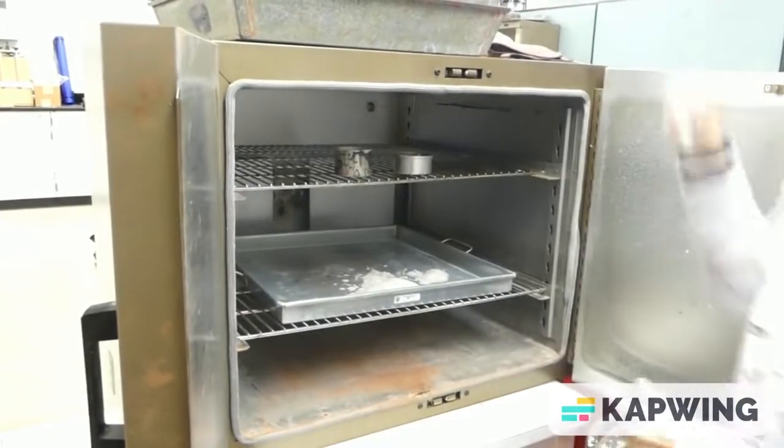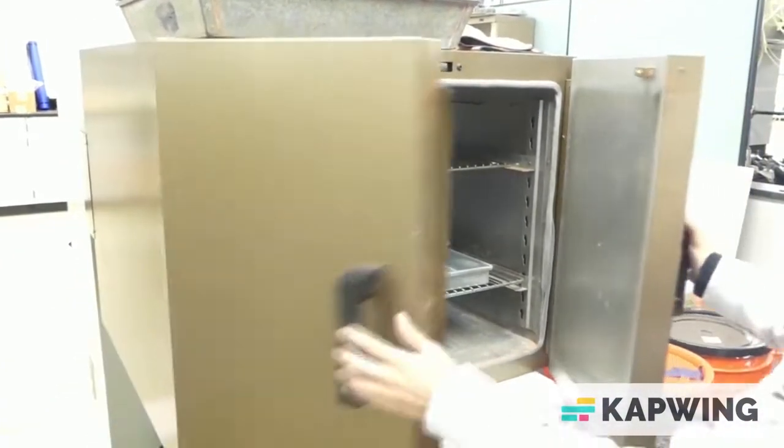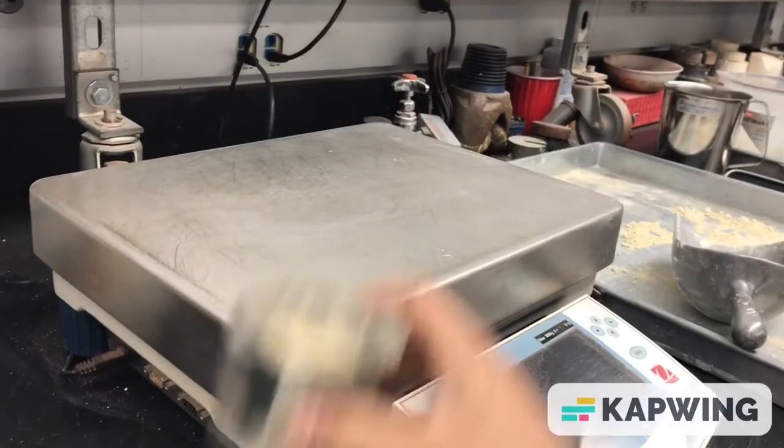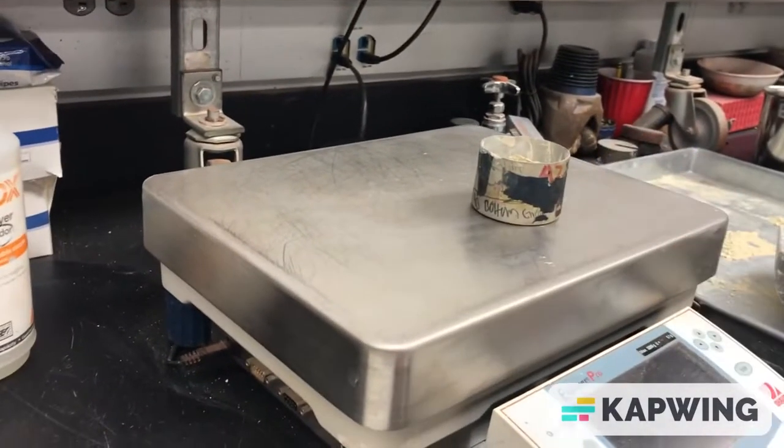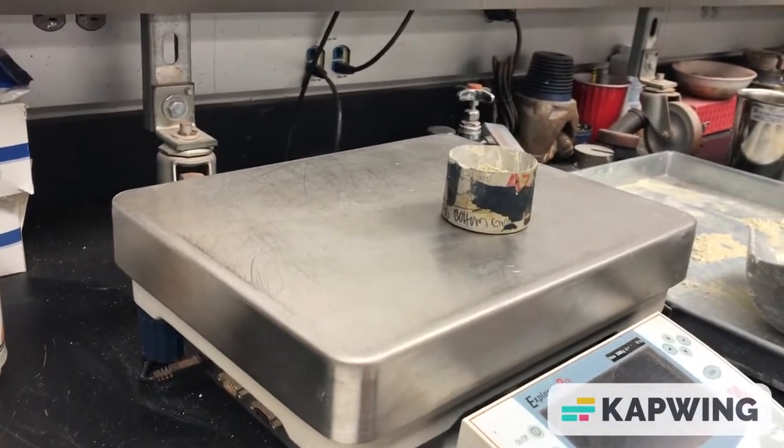You will then need to allow the soil in the tins to be fully dried. Once they are dried, you can take the weight of the tins again and make another note of it. Using this formula, you can now calculate the moisture content.